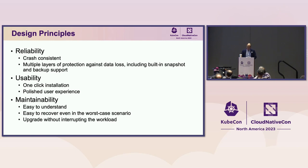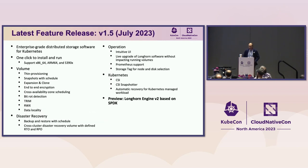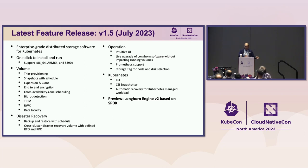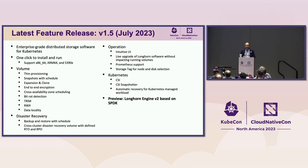The latest Longhorn feature release, 1.5, has been released a few months back. It's enterprise-grade distributed storage software for Kubernetes. We went from 'distributed block storage software' to 'distributed storage software' — a subtle but meaningful differentiator, because Longhorn currently supports ReadWriteMany storage as well. In the future, and in the demo shortly, we're going to support object storage using the S3 API as well.